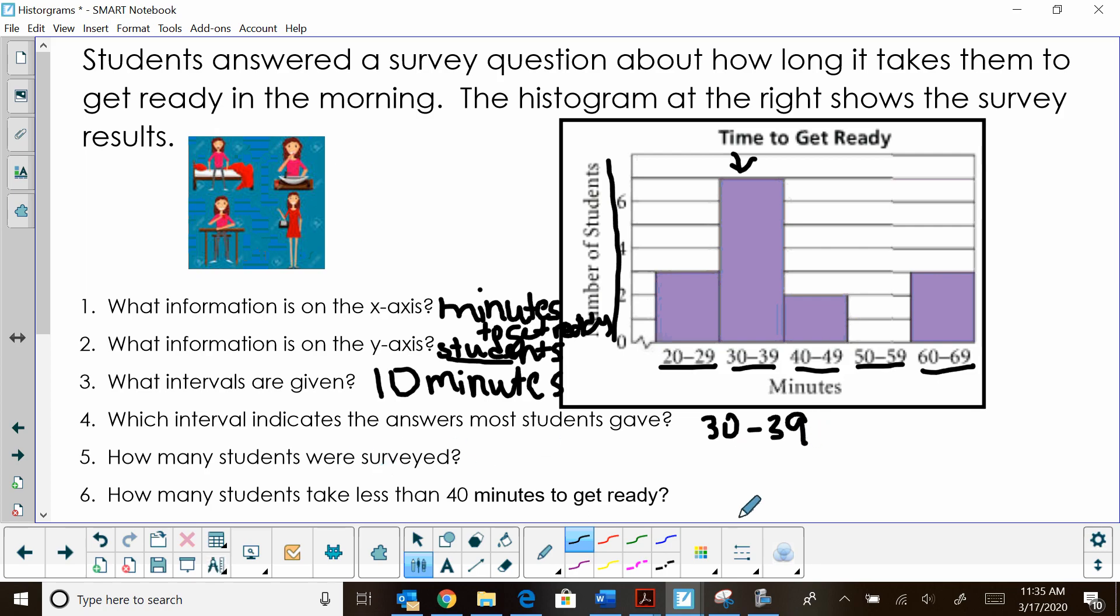How many students were surveyed? Well, what you have to do for the total number to figure out how many students were surveyed is look at how many students answered the question in each interval. So for the 20 to 29 interval, we had three students that answered in that interval. 30 to 39, we have seven students in that interval. 40 to 49, we have two. Nobody answered in the 50 to 59. And then 60 to 69, we had three students. So we're going to add all those up. Three plus seven, that's 10. 10 plus two is 12. 12 plus three is 15 students took this survey.